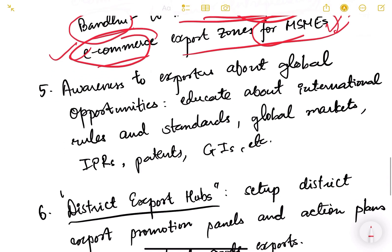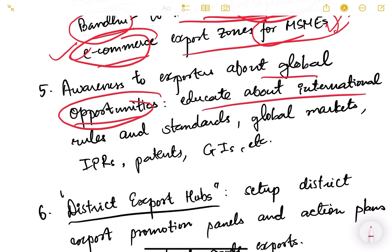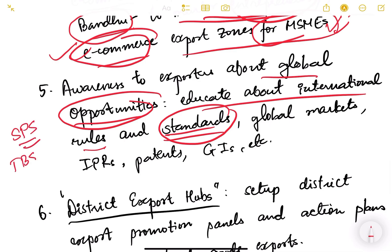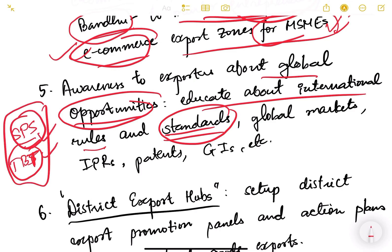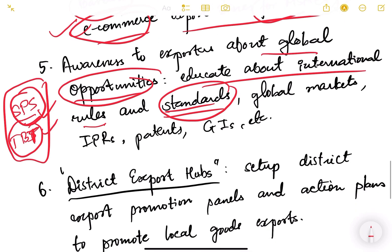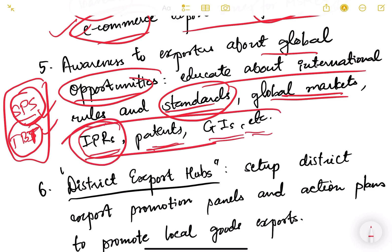Awareness to exporters about global opportunities is essential. Our exporters, traders, and businessmen are not aware of what is happening in the outside world and what opportunities exist — maybe there is a lot of demand for Indian products in Africa or Australia but they don't know how to export or where. We need to educate them about international rules, standards, acceptable quality of products, sanitary and phytosanitary measures, technical barriers to trade, how to access global markets, how to exhibit and sell their products, and about intellectual property rights — patents, geographical indications, etc.